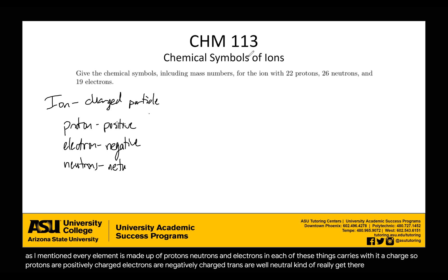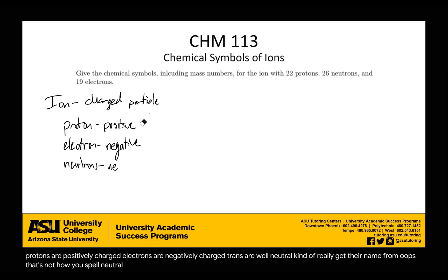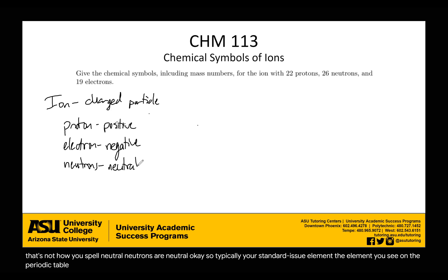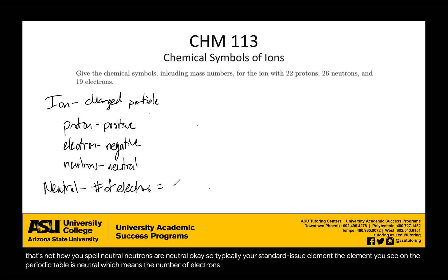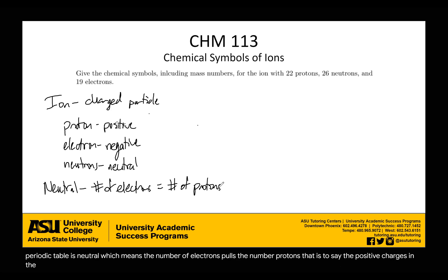Neutrons are neutral — kind of where they get their name from. Typically, a standard element as seen on the periodic table is neutral, which means the number of electrons equals the number of protons. The positive charges and negative charges are equal to each other, so they cancel out, meaning your element is neutral.